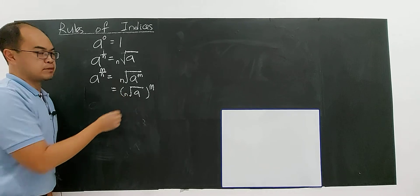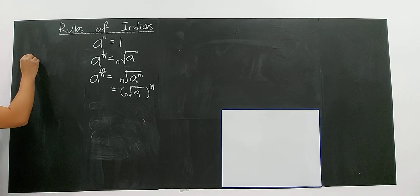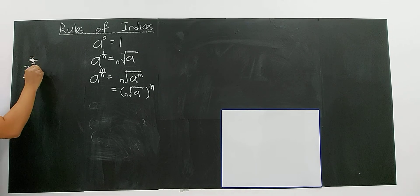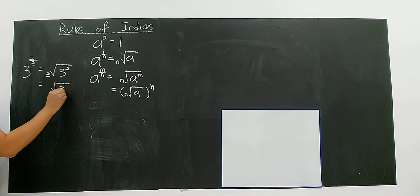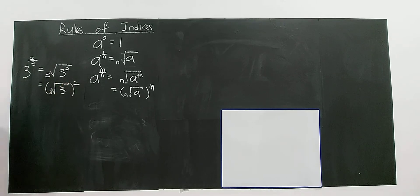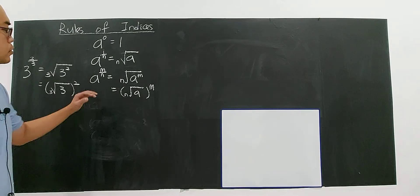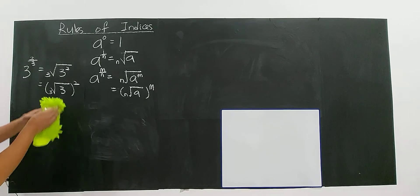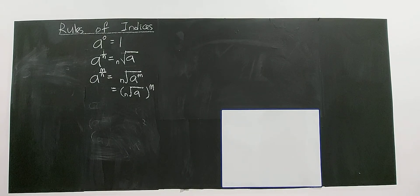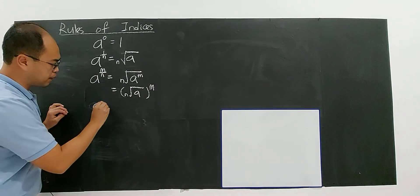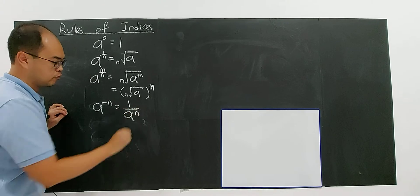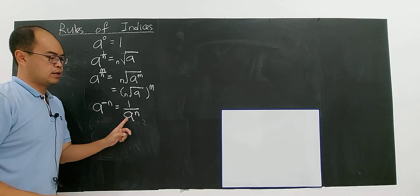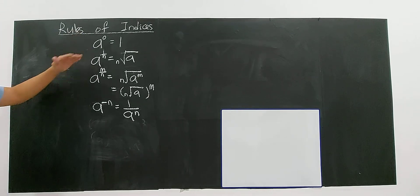These carry the same meaning. For example, if I have 3 to the power of 2 over 3, I put the cube root — the denominator is the cube root — and 3 to the power of 2 inside. Or I can write it as the cube root of 3, everything to the power of 2. Additionally, A to the power of negative N equals 1 over A to the power of N. This is a basic rule you need to know.